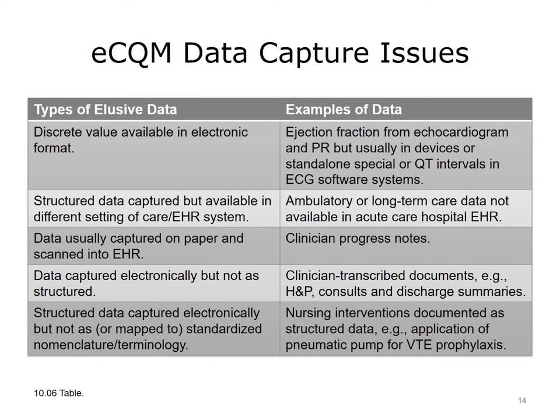eCQMs require standardized patient data to generate accurate results. In general, this requires structured data capture of key data elements within the EHR using standardized nomenclature. Structured data captured using local terms needs to be mapped to standardized data elements. Historically, a large amount of patient data is often captured on paper and scanned in or as unstructured text. Conversion of unstructured text into codified structured data using NLP, natural language processing, algorithms offers promise in the future, especially for historical data. Most current EHR implementations are designed to capture at least some key data elements as structured data.